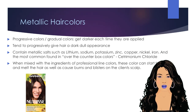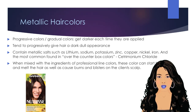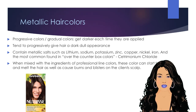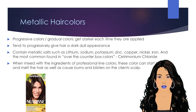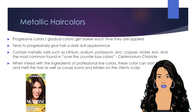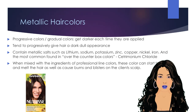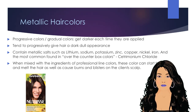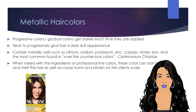They contain metallic salts such as lithium, sodium, potassium, zinc, copper, nickel, or iron. The most common metallic salt found in over-the-counter box colors is cetrimonium chloride. When mixed with the ingredients of professional color lines, the combination of the oxidation process with the metals from the boxed dyes can start to boil, burn, and melt the hair from the inside, as well as cause burns and blisters on the client's scalp.